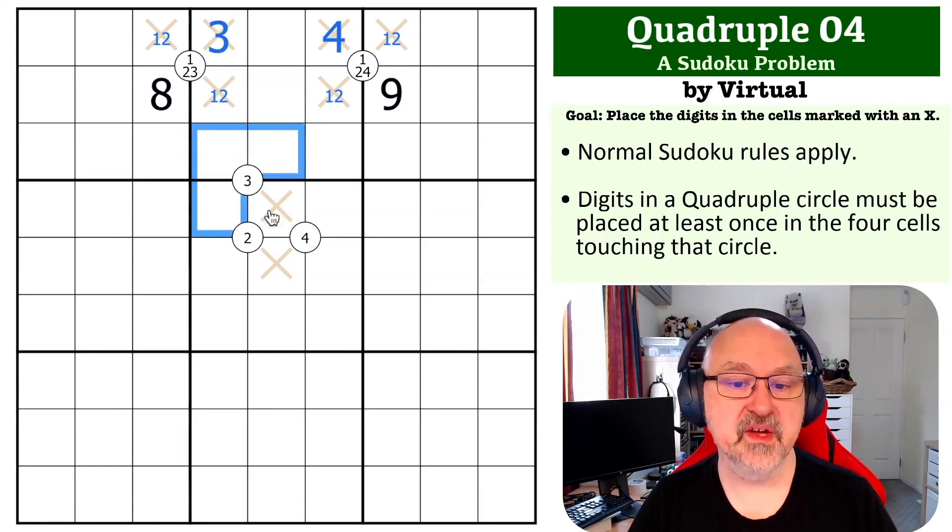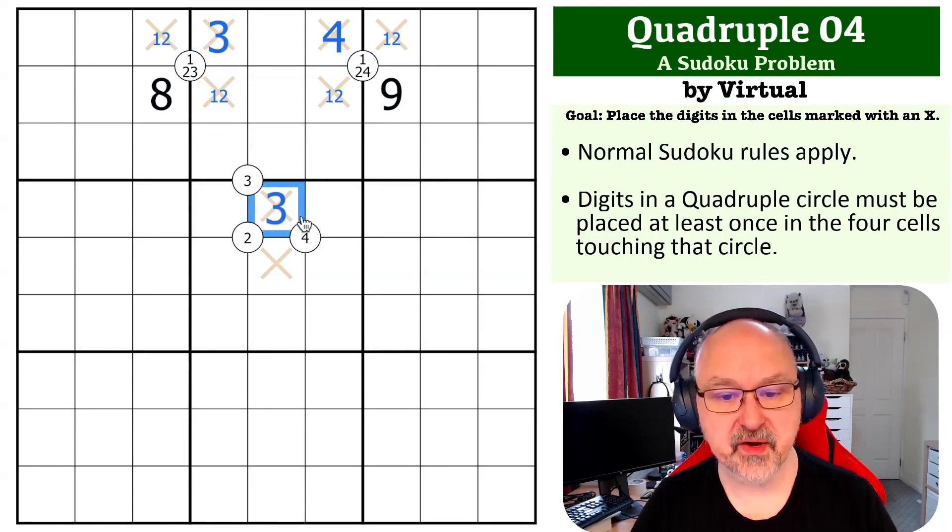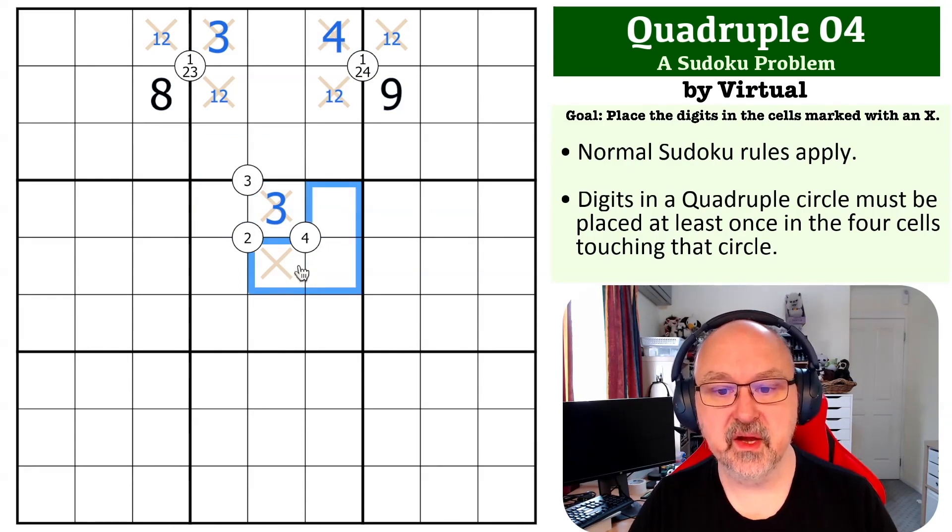Now this three, if you look at this quad, it sees all of those three cells - it sees those two in the box and that one in the column. So this has to become the three.